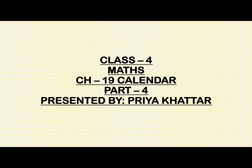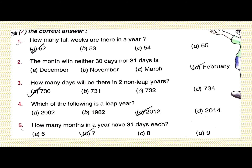This is part 4 of chapter 19 on Calendar. Today we will discuss question bank 1. First question: how many full weeks are there in a year? There are 52 weeks. Part A is correct.